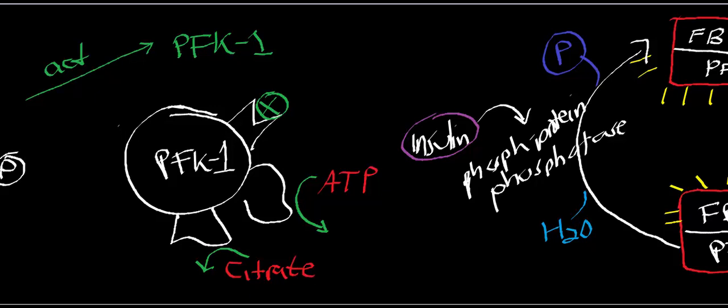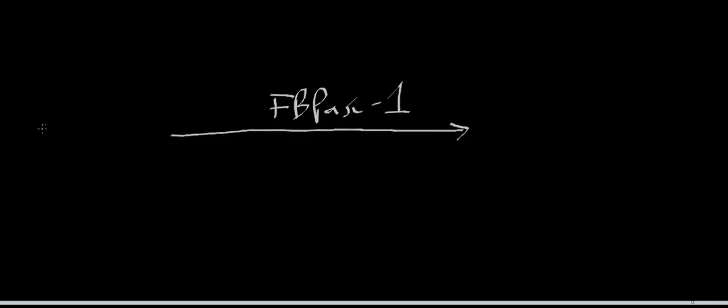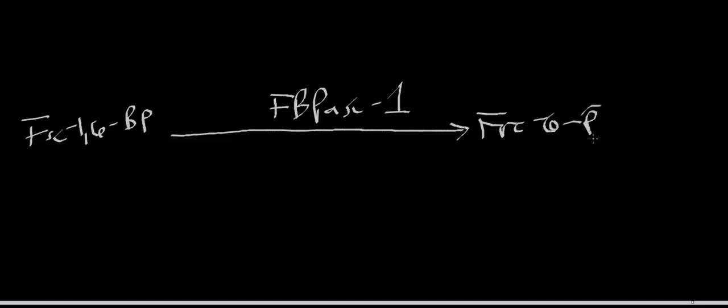It turns out that fructose bisphosphatase 1 — and I want to be perfectly clear about that — fructose bisphosphatase 1 is the gluconeogenic enzyme that takes fructose 1,6-bisphosphate and converts it into fructose 6-phosphate. It uses water to hydrolyze off that phosphate. And I want to be perfectly clear: this enzyme is also an allosteric enzyme.